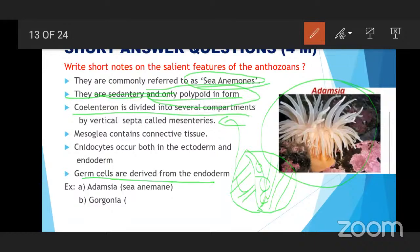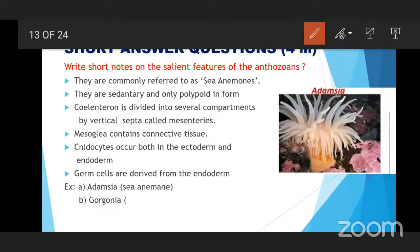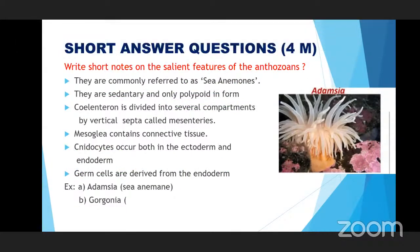Nematocytes occur both in the ectoderm and endoderm. Germ cells are derived from the endoderm. There are three germ layers: ectoderm, middle mesoderm, and inner endoderm. Ectoderm and endoderm possess nematocyte cells. Examples are Adamsia and Gorgonia — the sea fan.